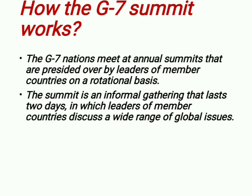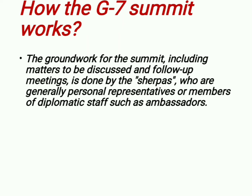The G7 nations meet at annual summits that are presided over by leaders of member countries on a rotational basis. The summit is an informal gathering that lasts two days, in which leaders discuss a wide range of global issues including economy and political matters. The groundwork for the summit, including matters to be discussed and follow-up meetings, is done by the Sherpas, who are generally personal representatives or members of diplomatic staff such as ambassadors.